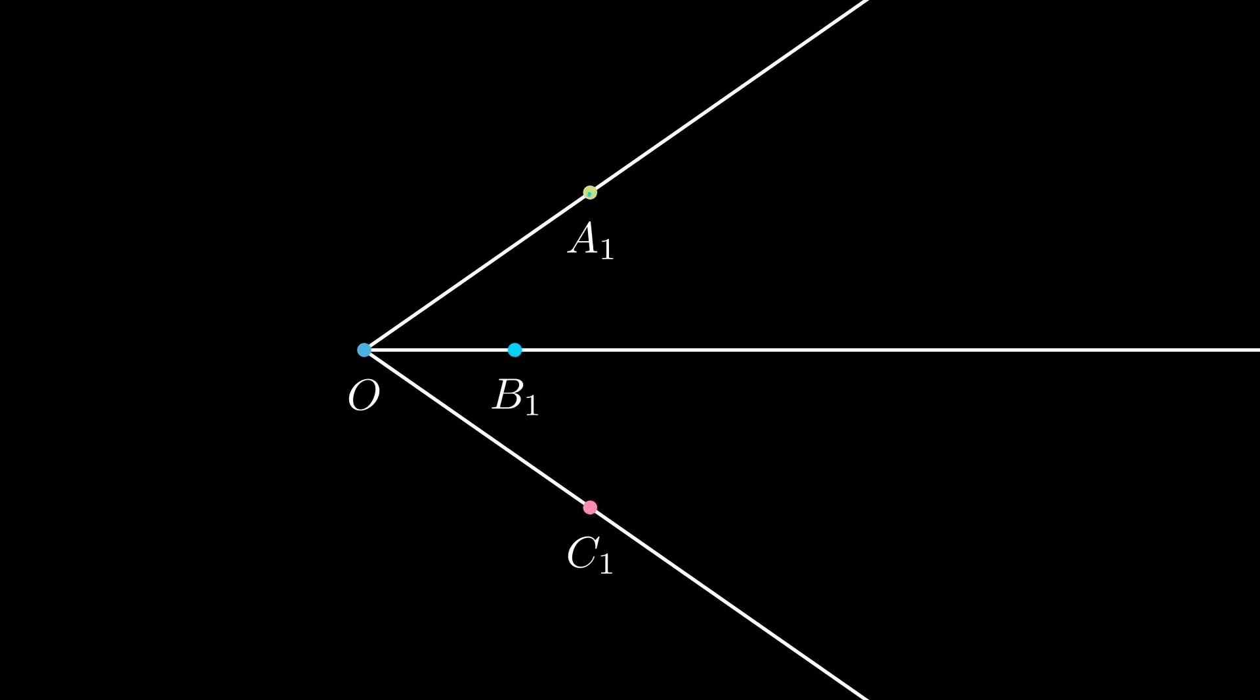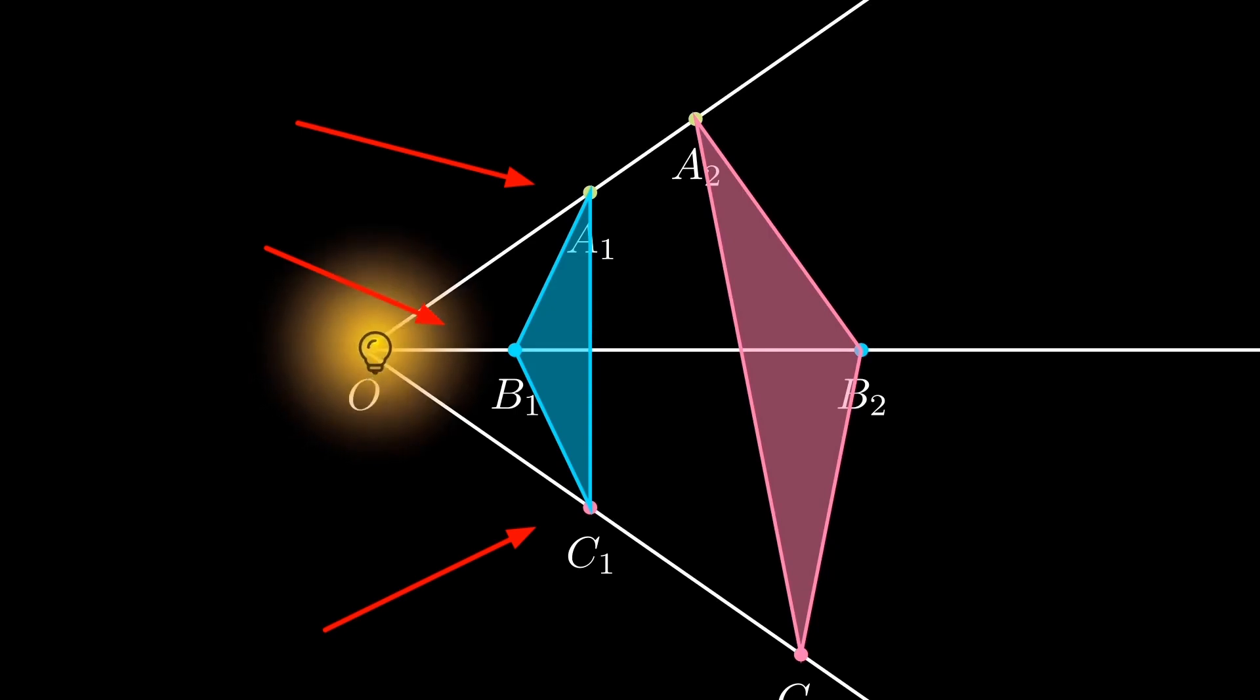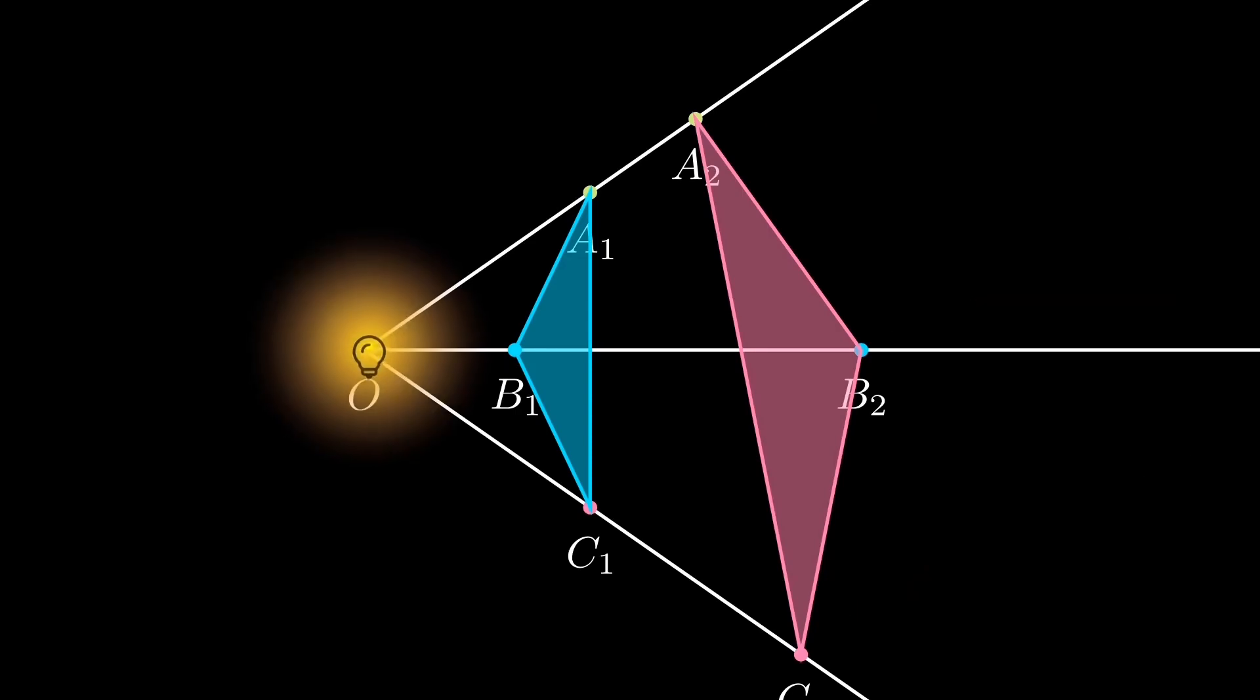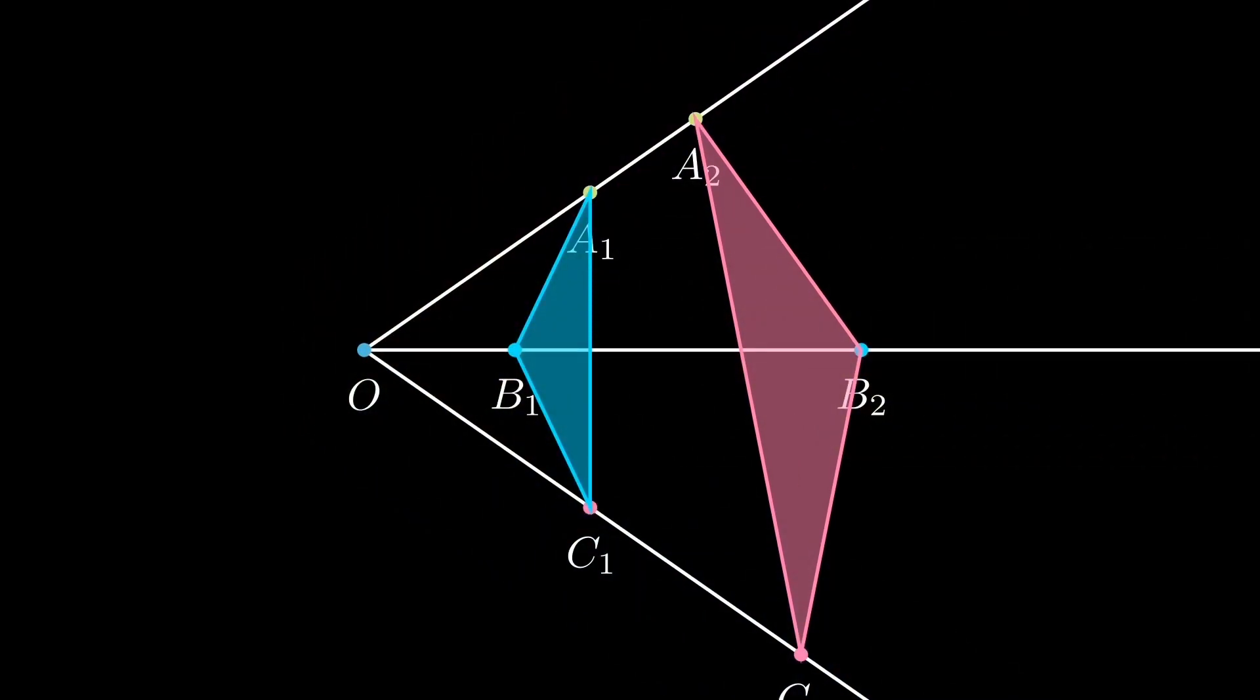Suppose we have a point O and three lines coming out of the point O and a triangle whose vertices are on the three lines. Then we draw another triangle whose vertices are also on the three lines. So the points A1, A2 and the points B1, B2 and the points C1, C2, they are all on the same straight line as you can see in the picture.